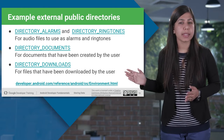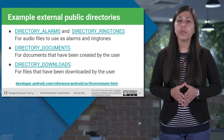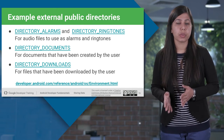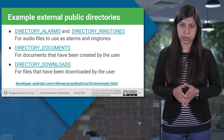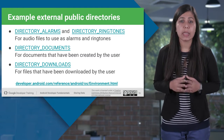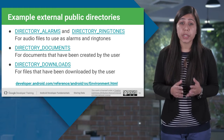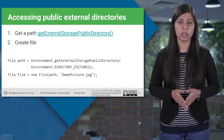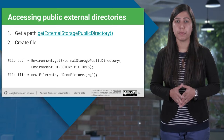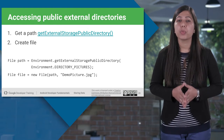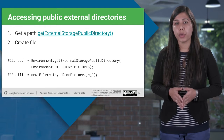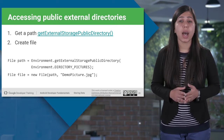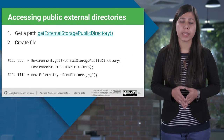Here we have listed some of the common external public directories that are Android-specific. We can use them quite often when working with storing files: DIRECTORY_ALARMS and DIRECTORY_RINGTONES for audio files for alarms and ringtones, DIRECTORY_DOCUMENTS for documents created by the user, and DIRECTORY_DOWNLOADS for files downloaded by the user. Android's Environment class is used to retrieve the environment folder information. When storing files publicly to public external directories, we use getExternalStoragePublicDirectory() to get the path, passing the type argument. Here is an example showing how to save images in the Pictures directory.